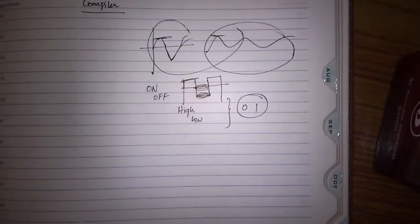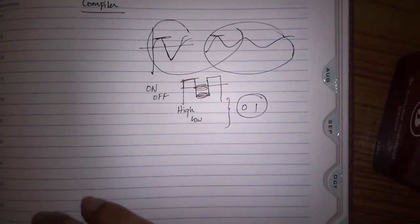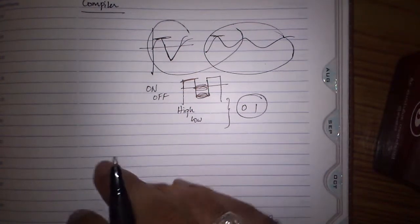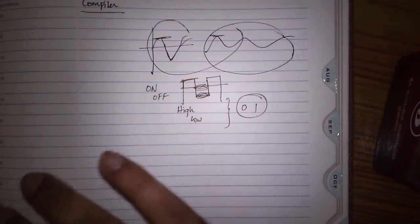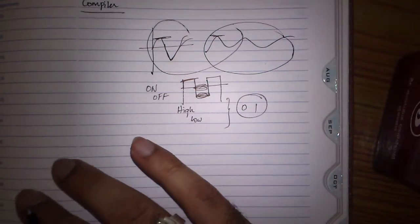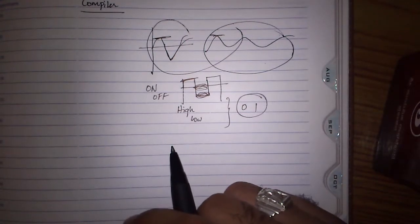This is why we call computer understands only binary language. In short it is said that computer can understand only machine code. If you Google the machine code for the meaning, it says a computer programming language consisting of binary instructions which a computer can respond to directly.